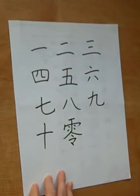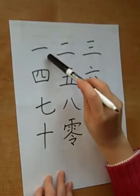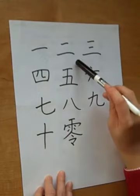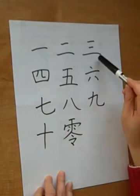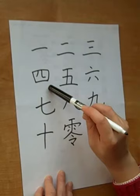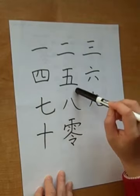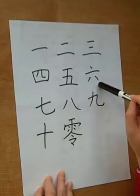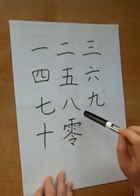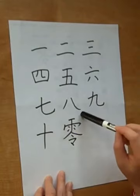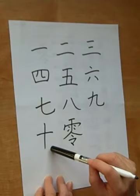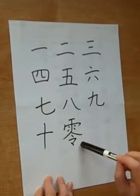Now let's read them again: yi, er, san, si, wu, liu, qi, ba, jiu, shi.